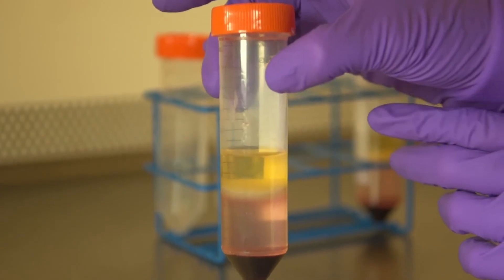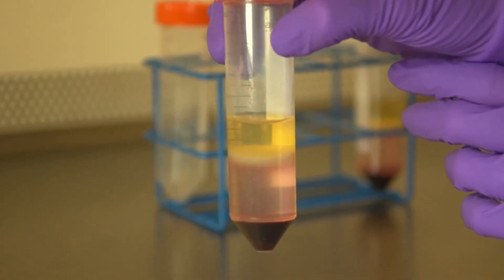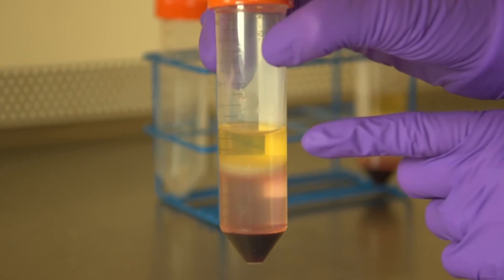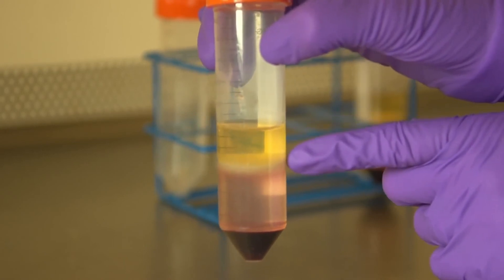This is what your sample looks like after centrifugation. Blood is separated into its constituent parts: plasma layer and fine layer of white blood cells.